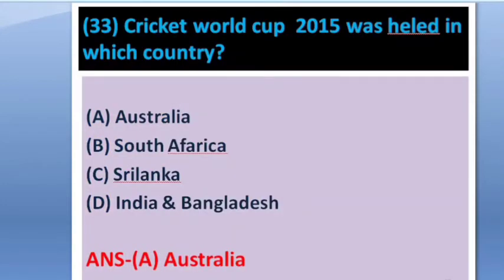Question: Cricket World Cup 2015 was held in which countries? Options: Australia, South America, Sri Lanka, India and Bangladesh. The answer is option A — Australia. This is a most important question.